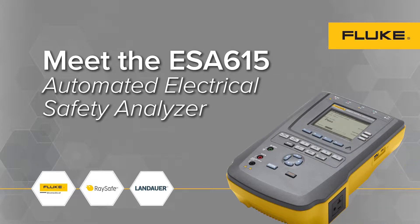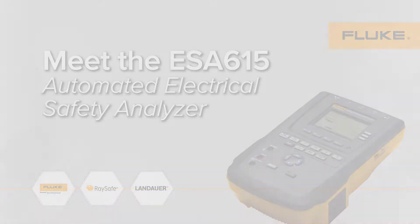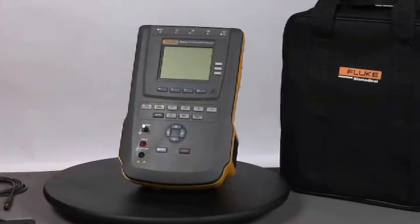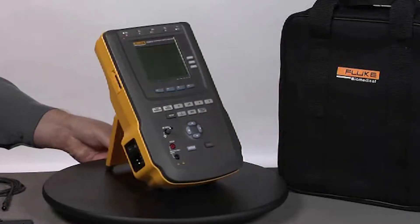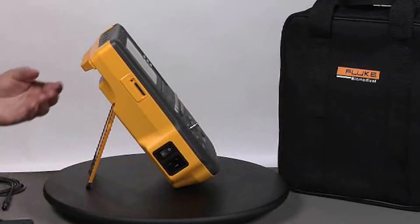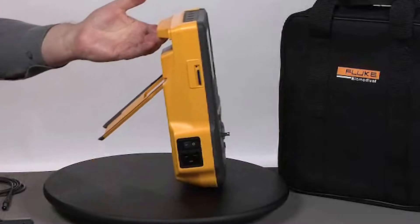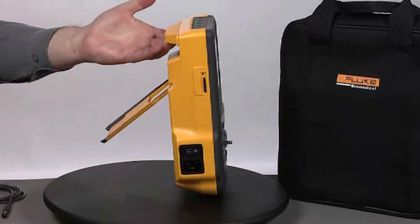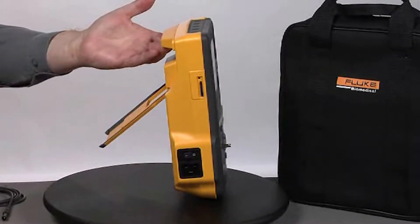Introducing the ESA615 Automated Electrical Safety Analyzer from Fluke Biomedical. This electrical safety analyzer includes a newly designed, very ergonomic carrying handle, as well as an easy-to-use tilt stand.